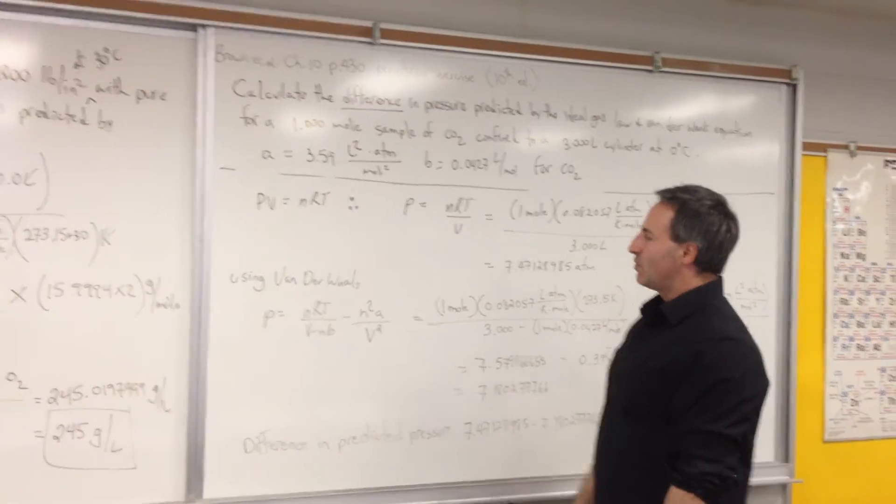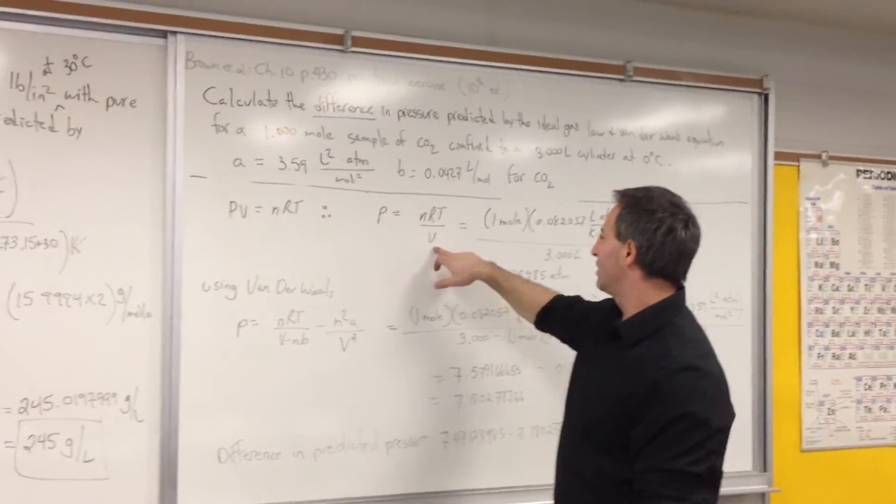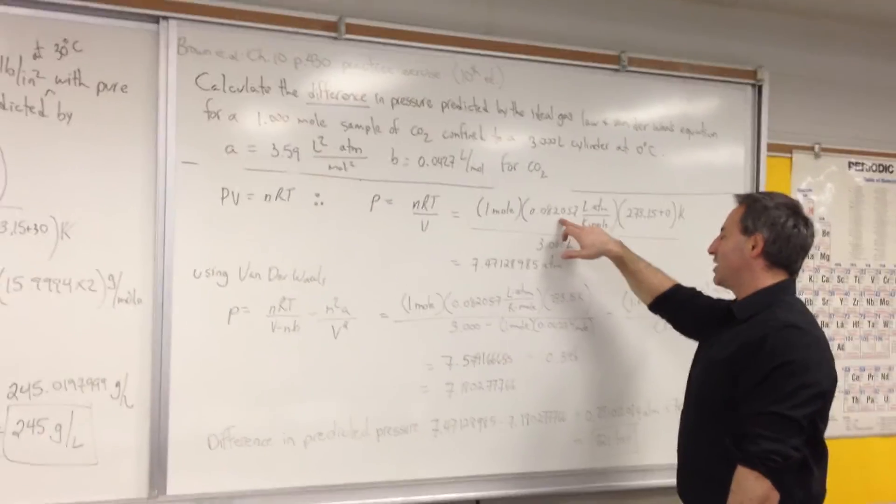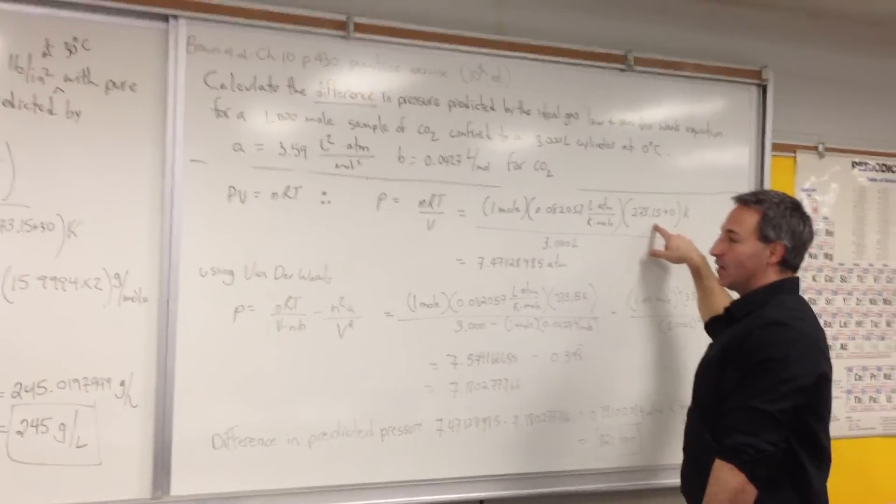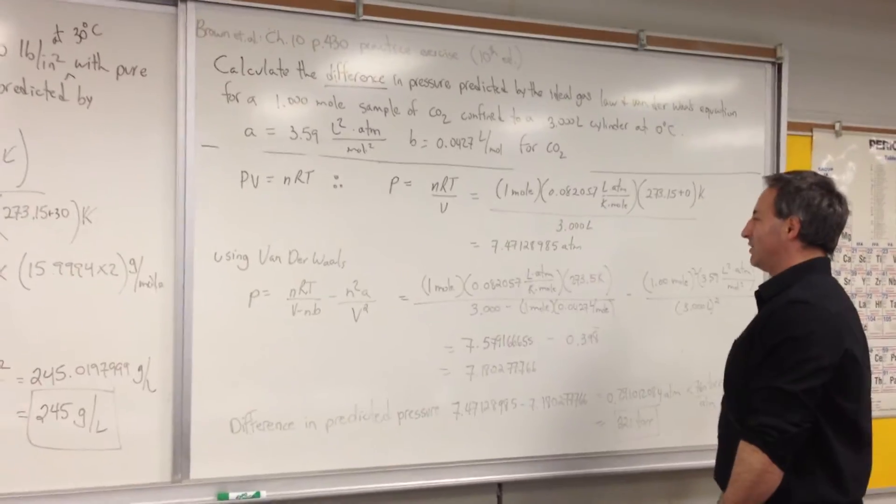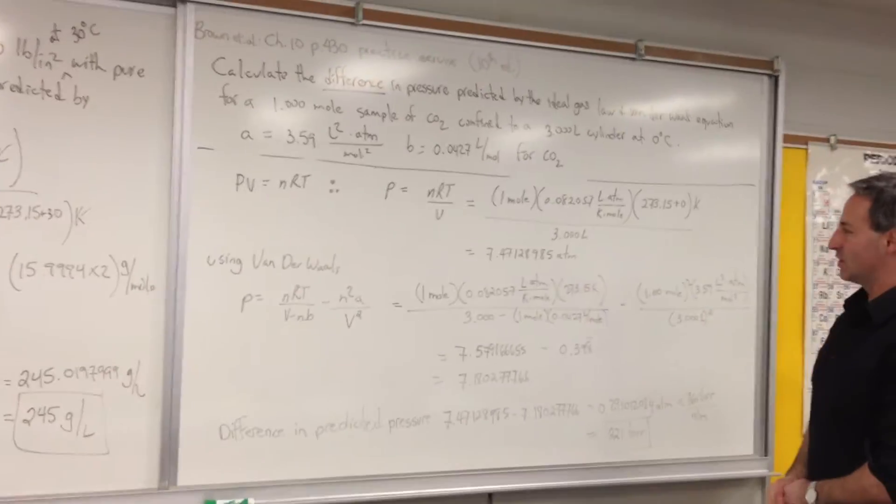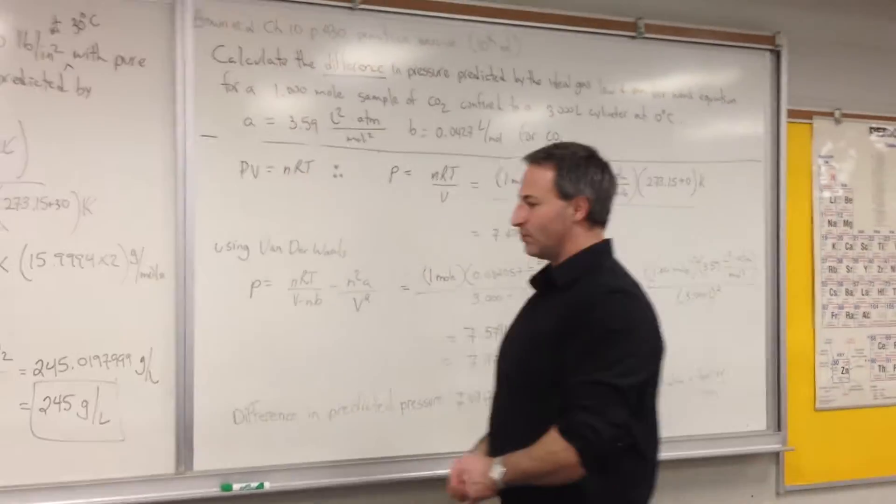First, we solve the equation for the ideal gas law prediction. P equals nRT. Solve for pressure by isolating P. Enter all the values. Again, we use 0.082057 per liter atmospheres. The temperature has to be converted to Kelvin. So at 0 degrees Celsius, you still get 273.15 Kelvin. Divide by the volume, and you get an answer of 7.47 atmospheres. I kept all the decimal places in the calculation to avoid truncation error.